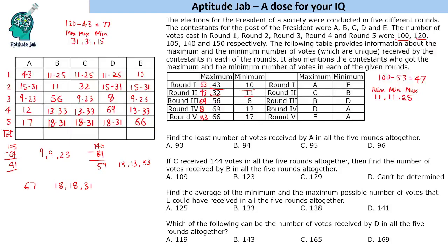Now we will add these ranges across rounds to find the range of total votes for each contestant. For A, 72 is fixed from rounds where A had known values. Taking the minimum contribution of 24 from other rounds gives 96, and taking 54 gives 126. So the possible range for A's total is 96 to 126.